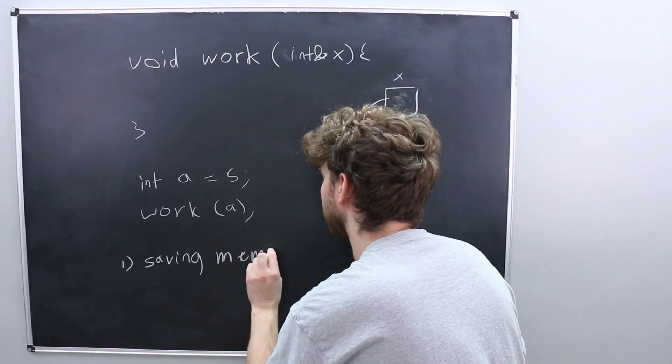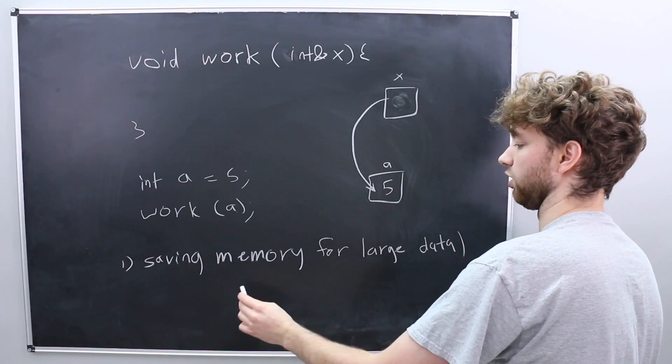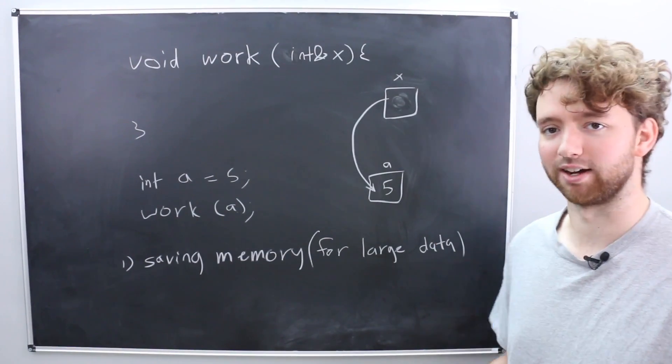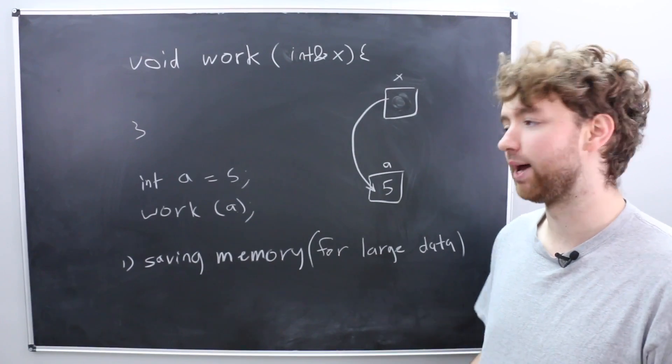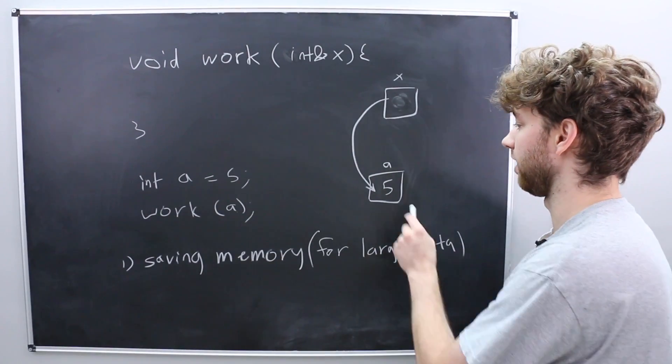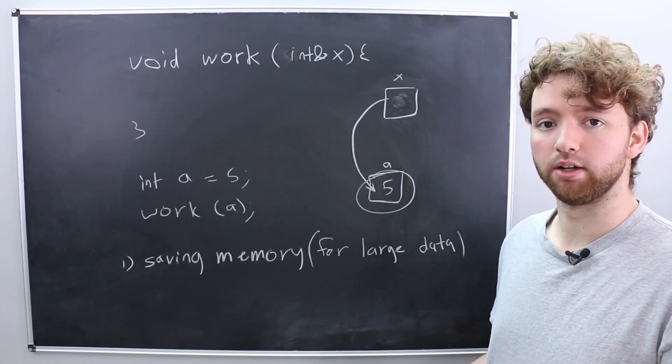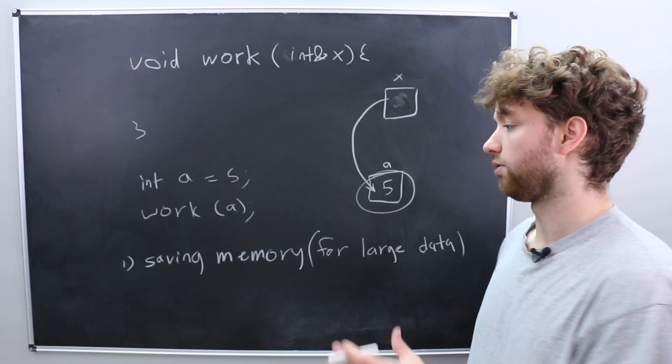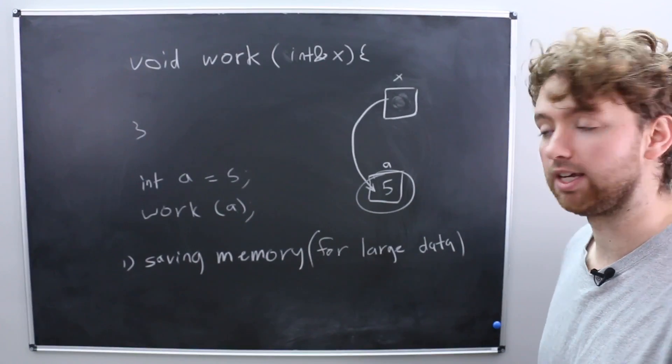Because if you're just working with integers it's not going to make a difference. But imagine the data you're working with is very large, you're only going to have one copy of it in memory and then you're just going to refer to it from the parameter. So that is the immediate benefit you're going to see.